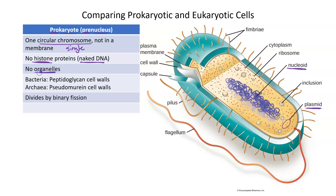Unlike eukaryotes, prokaryotes have no organelles. Throughout their cytoplasm, there is no endoplasmic reticulum, no Golgi apparatus, no mitochondria, no chloroplasts — none of those organelles that you typically see with eukaryotes are going to be found in a prokaryote.